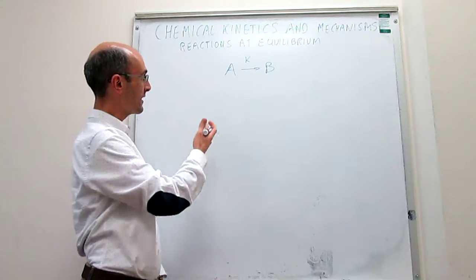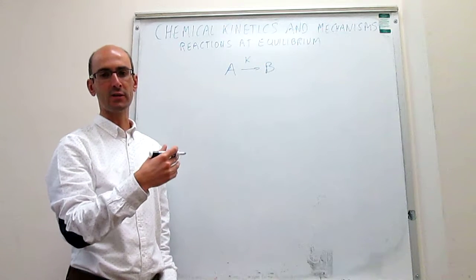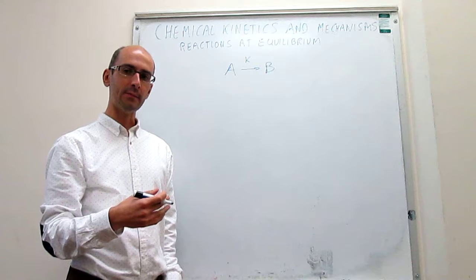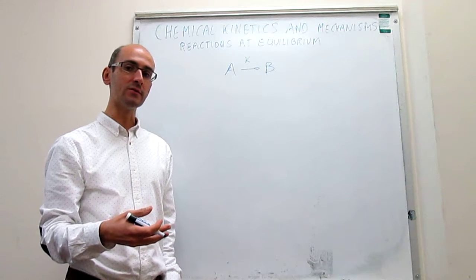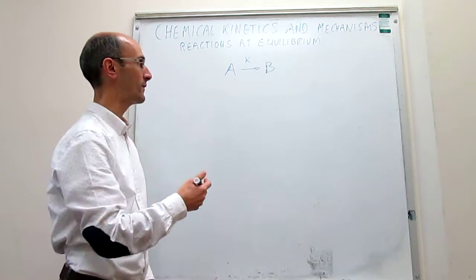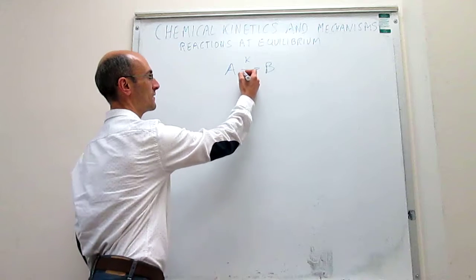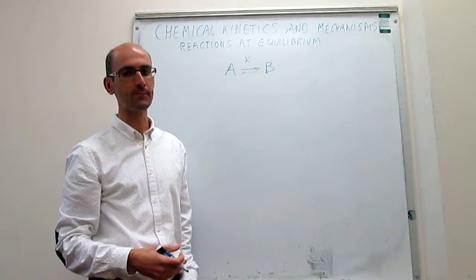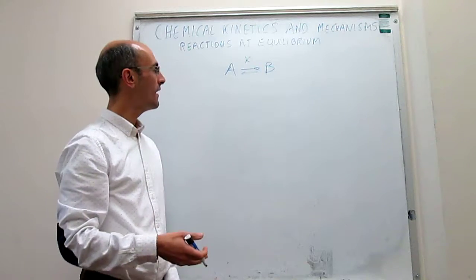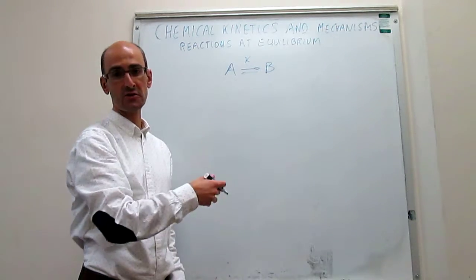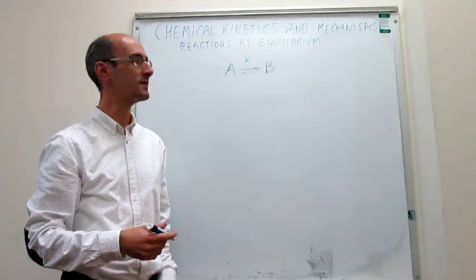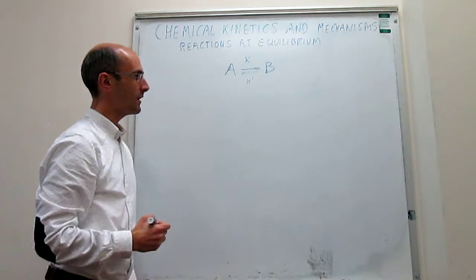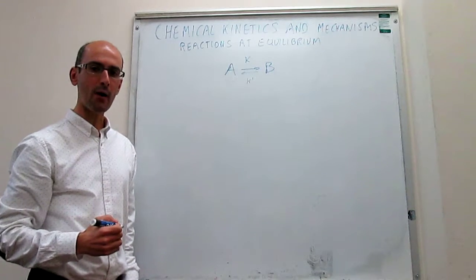Until now, what we have studied is that the reaction would just proceed from A to B and would not be reversible. But we know that in most chemical reactions, the reversible pathway — B to A — occurs to some extent. So let's assume that in this case the reversible reaction is pretty prevalent and occurs through a rate constant K'.